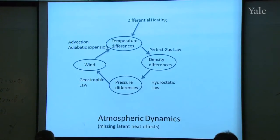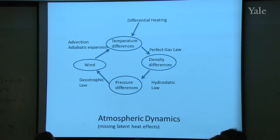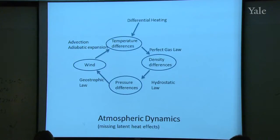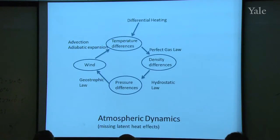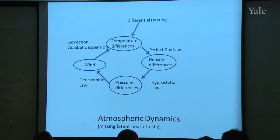The general circulation is pretty complicated, and other aspects of atmospheric motion such as storm development are also complicated. I wanted to give you a broad outline of how the atmosphere moves — what drives it and what affects what in a causal loop. I constructed this atmospheric dynamics diagram, a box diagram that tries to point out some of the causality. The reason it's appropriate to bring in at this point is that you've already dabbled with a number of these concepts, so you can appreciate how some of these linkages work.